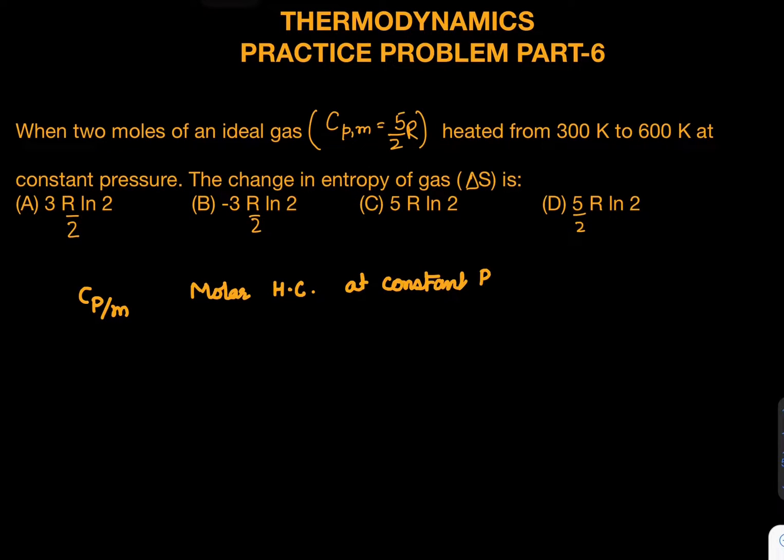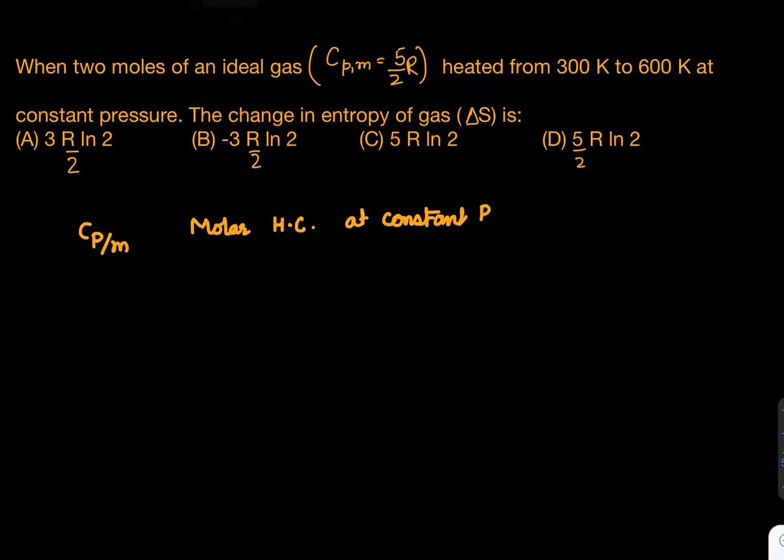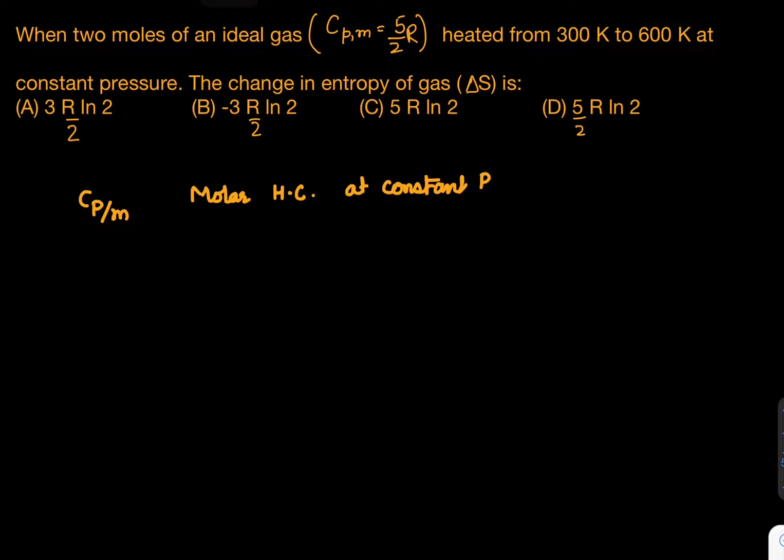So we write dq = dU + PdV. Now if you proceed further, what is dq? We can say nC dT, right?